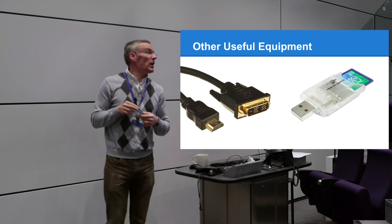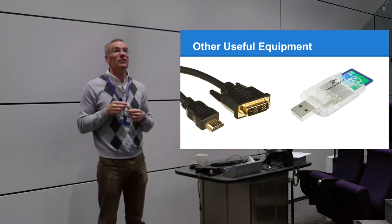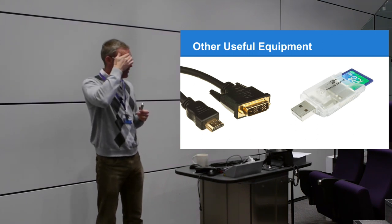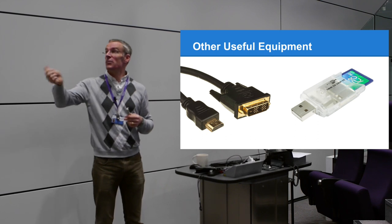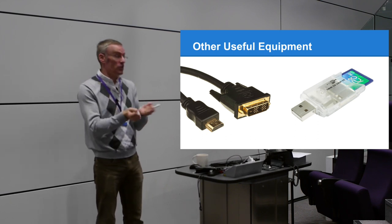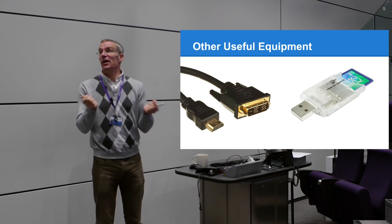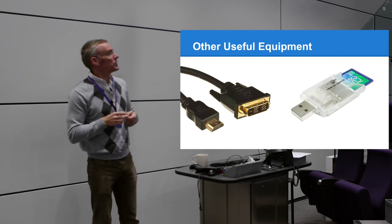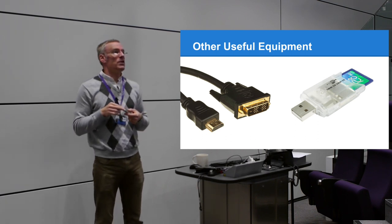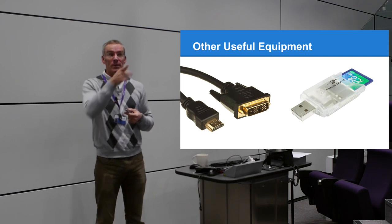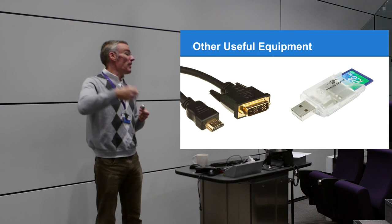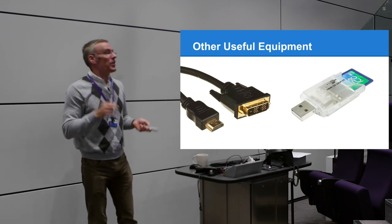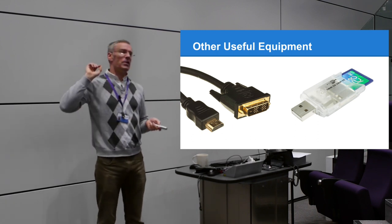Other useful equipment: occasionally you need to plug your Raspberry Pi into a TV or monitor. It's HDMI on the Raspberry Pi, so you can use an HDMI TV or if you've got a monitor with a DVI socket you can get a cheap DVI-to-HDMI cable for about £1.50. For writing images you'll need a way to read and write an SD card - most laptops have an SD card slot, or just get a cheap USB SD card reader.